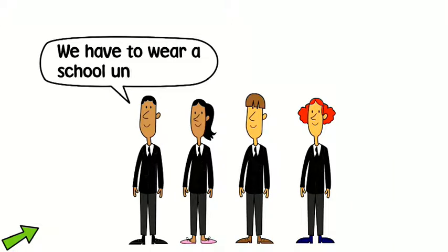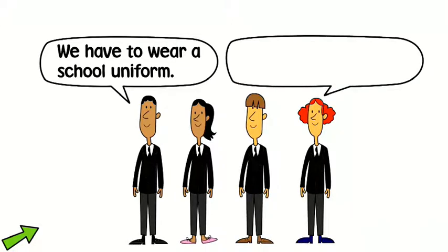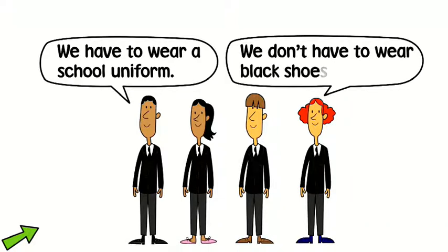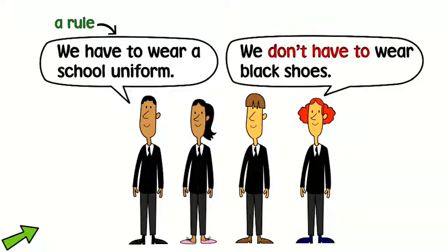We have to wear a school uniform. We don't have to wear black shoes. We use have to to say something is necessary because of a situation or a rule. We use don't have to to say something is not necessary to do.